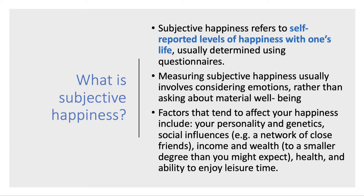What is subjective happiness? It refers to self-reported levels of happiness with one's own life, usually using questionnaires and samples. Measuring this normally involves considering emotions rather than just asking about cars a family owns, properties, or income per capita. Lots of factors affect happiness: personality, genetics, social influence, whether you have a large network of close friends, income and wealth — but relative income and relative wealth can be important — your health, absence of chronic illness, and your ability to access and enjoy leisure time.